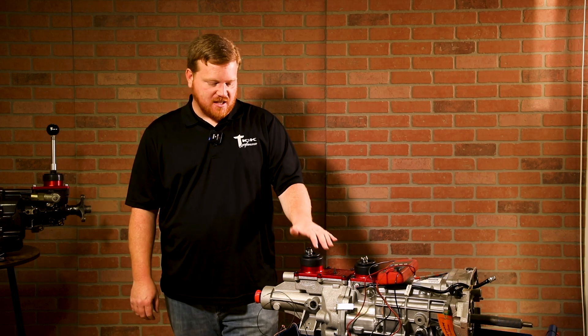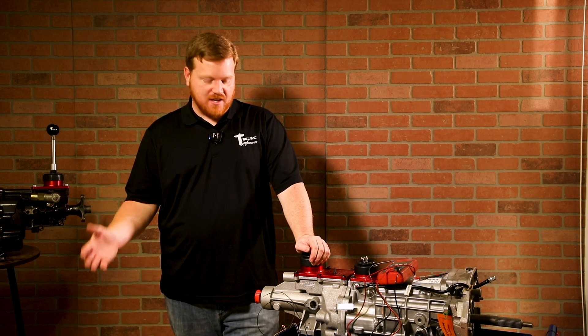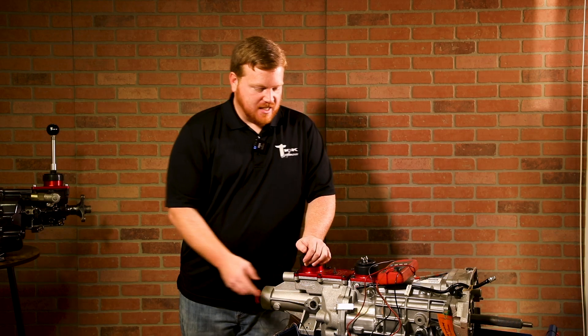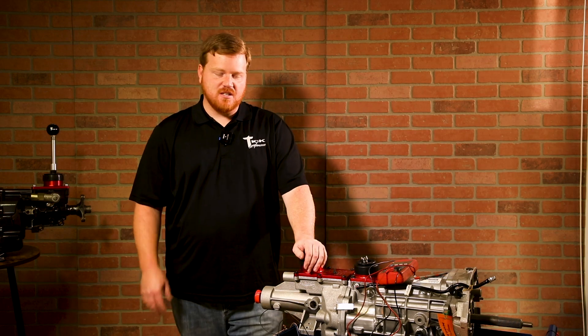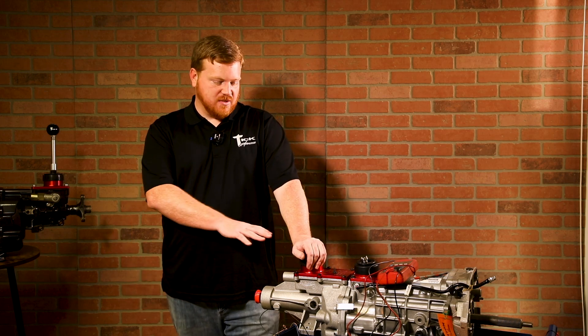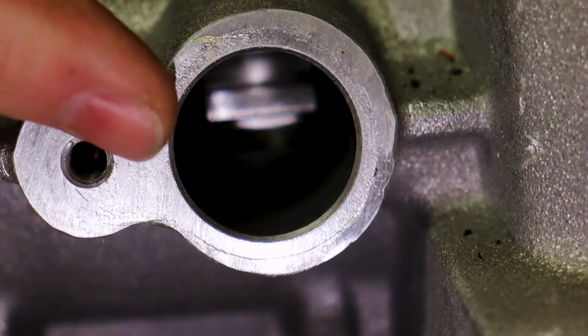So one thing you're going to need to know when you're installing this and tuning your EFI system is the tooth count on the reluctor wheel. Most of these Tremecs are going to be 12 or 17 tooth. In this case with the XL, this is going to be a 12 tooth that's right here, but I always recommend checking.